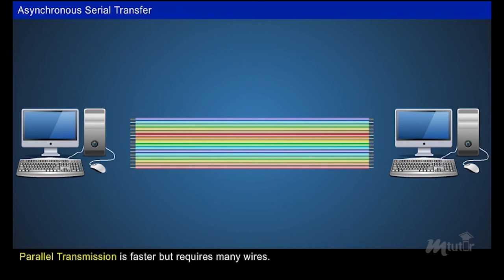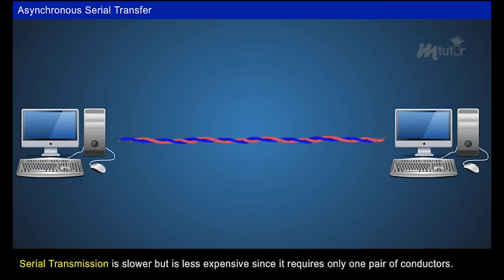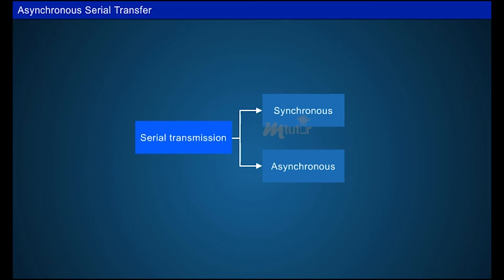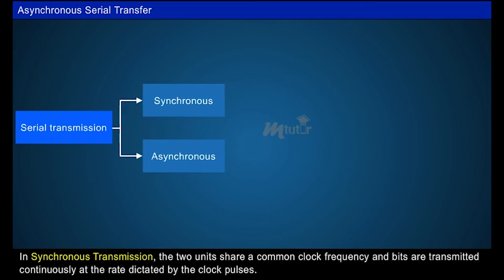Parallel transmission is faster but requires many wires. It is used for short distances where speed is important. Serial transmission is slower but less expensive since it requires only one pair of conductors. Serial transmission can be synchronous or asynchronous.